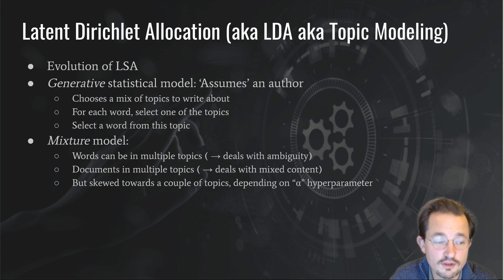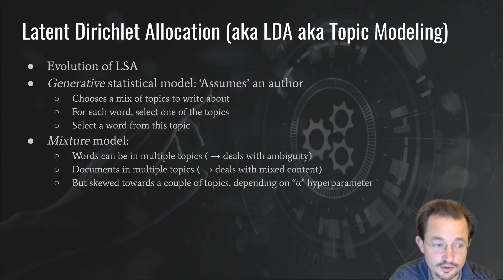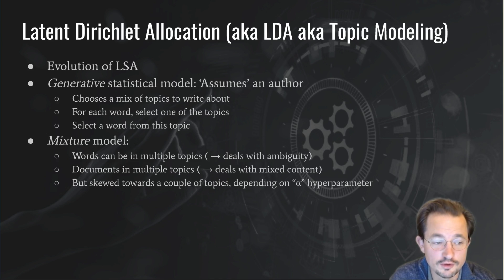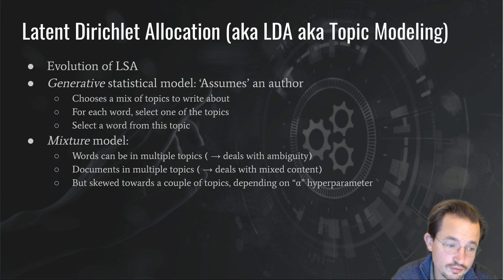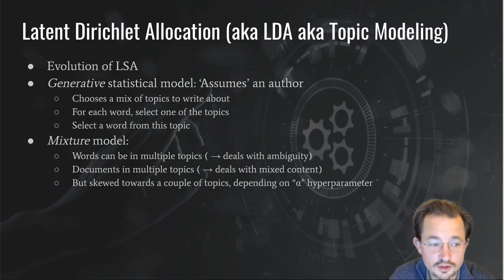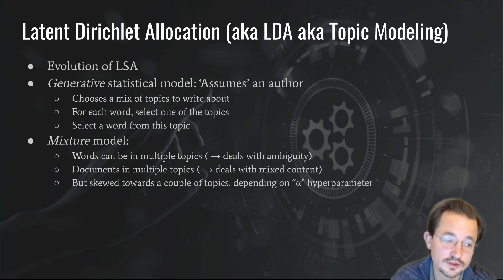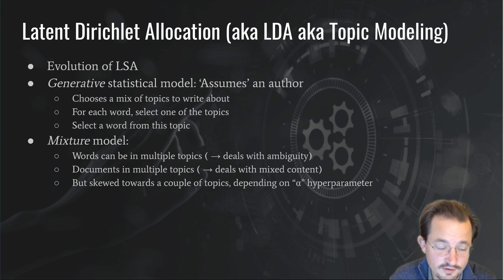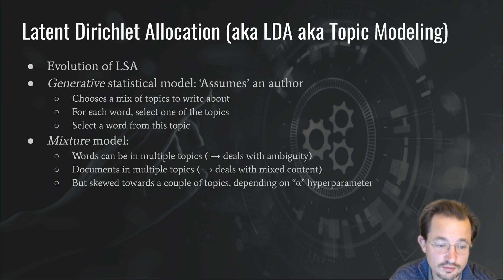Finally, even though words and documents can be in multiple topics, they are skewed towards only having a couple of topics. The model prefers a document with maybe one big topic and a couple of small topics, or two bigger topics, rather than a document spread over all the topics. This skewedness towards a low number of topics is based on the Dirichlet distribution and depends on the alpha hyperparameter.